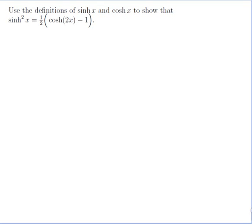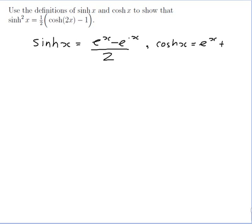Use the definitions of sinh x and cosh x to show that sinh squared x is equal to half of cosh 2x minus 1. It says to use the definitions, so let me write them down. Sinh x is equal to e to the x minus e to the minus x over 2, and cosh x is equal to e to the x plus e to the minus x over 2.